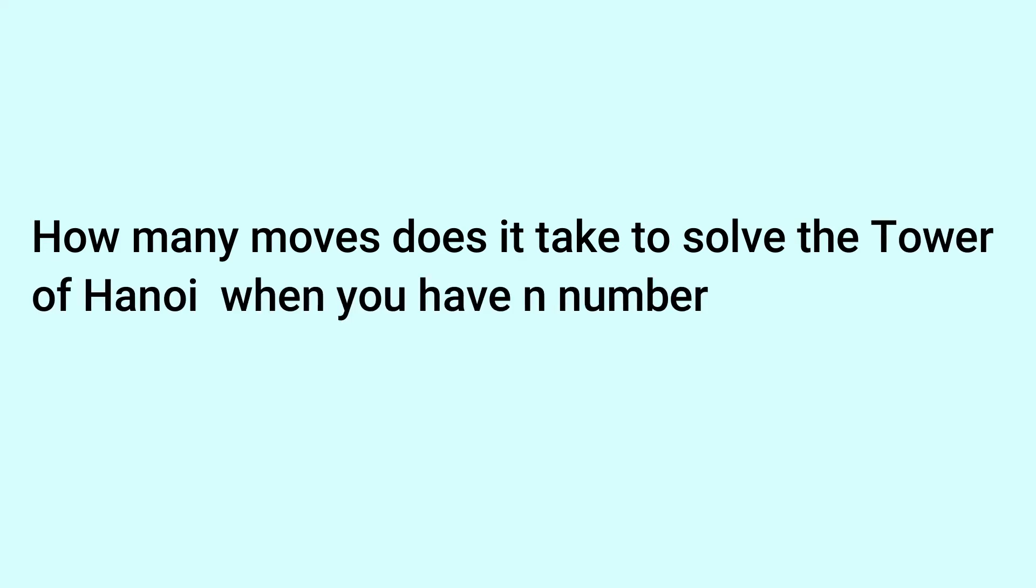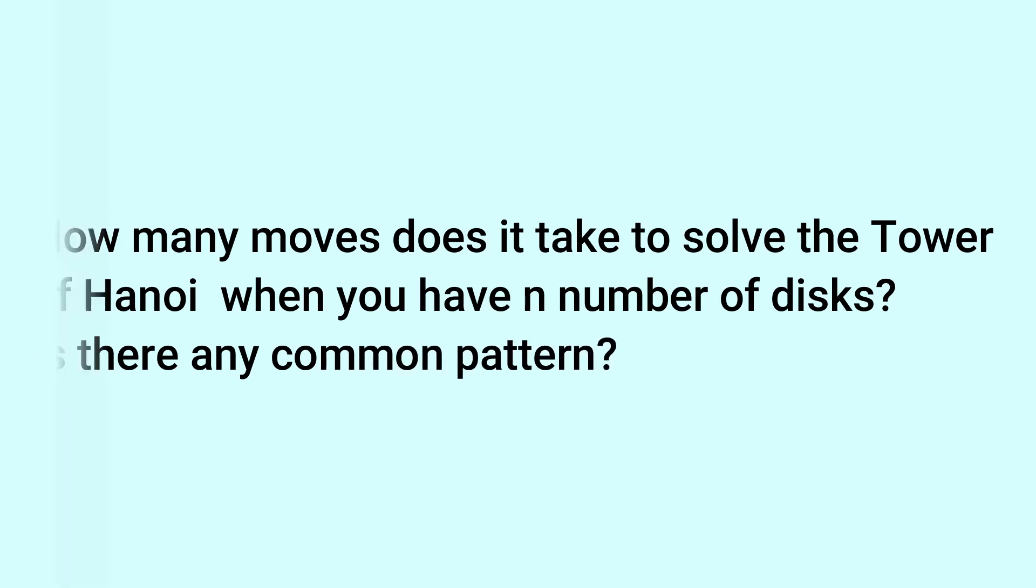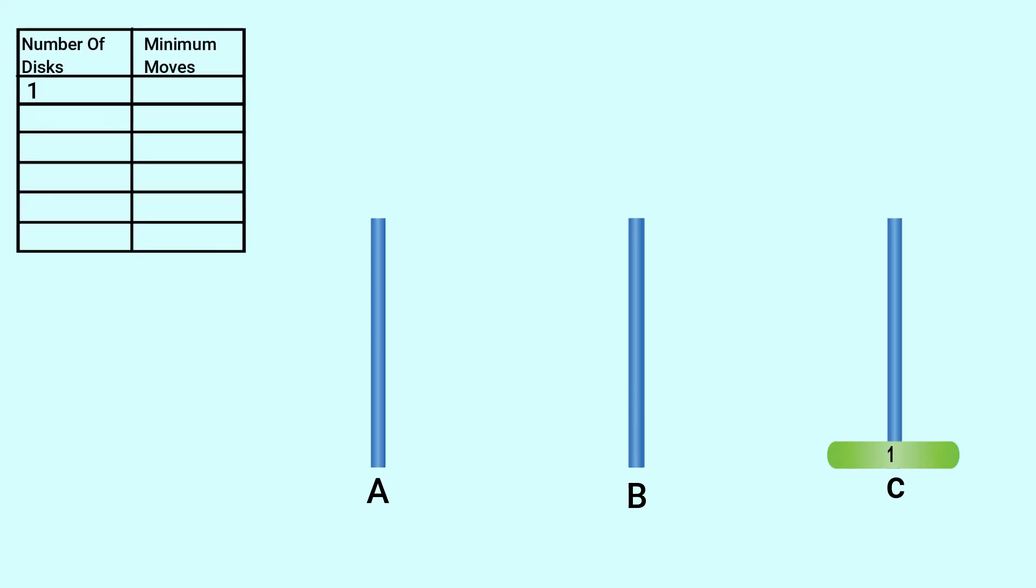Now, the question is: how many moves does it take to solve the Tower of Hanoi when you have n number of discs? Is there any common pattern? Here, let us take three rods. Rod A is source, rod C is destination, and rod B is auxiliary. Initially, take one disc and try to find minimum moves. Only one move is needed to reach the destination. So move the disc from source A to destination C. Let me prepare a table. For one disc, one minimum move is needed.